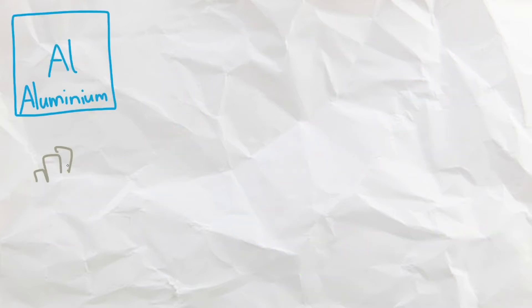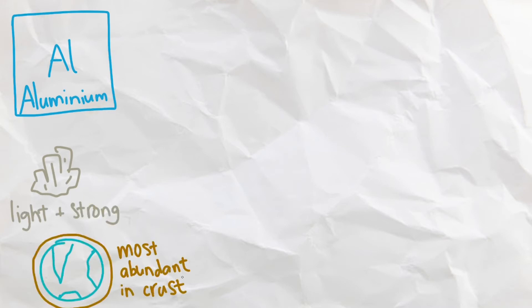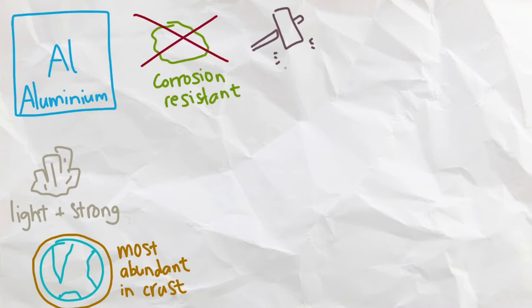Next, we have aluminum, a very well-known metal that is light yet strong, and it is the most abundant metal on Earth's crust. Its most notable properties are that it is very resistant to corrosion and is the second most malleable metal, which means that it can be easily made into different shapes and forms.